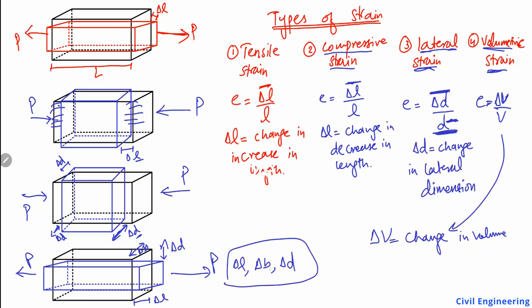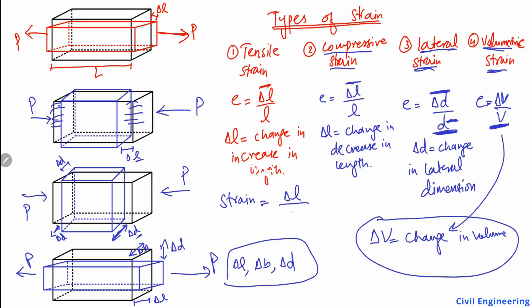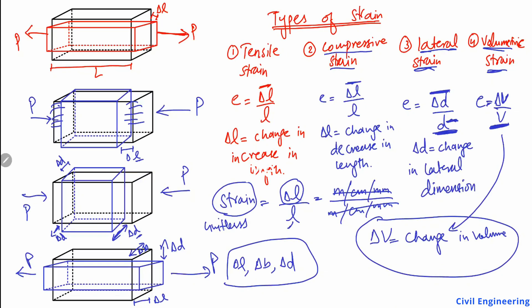These changes in length, width, and depth all contribute to the change in volume. Delta V divided by the original volume V is known as the volumetric strain. These are the four types of strain. Keep in mind that strain has no unit because it is the ratio of two similar quantities — for example, change in length divided by original length — so the units cancel out.